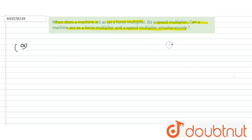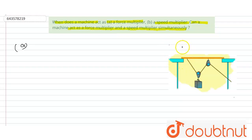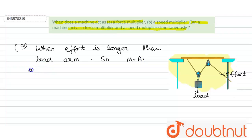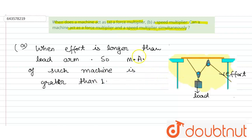Here is the diagram of a movable pulley. This is the effort force and this is the load. When the effort arm is longer than the load arm, the mechanical advantage of such a machine is greater than one. This is the first part for the force multiplier.